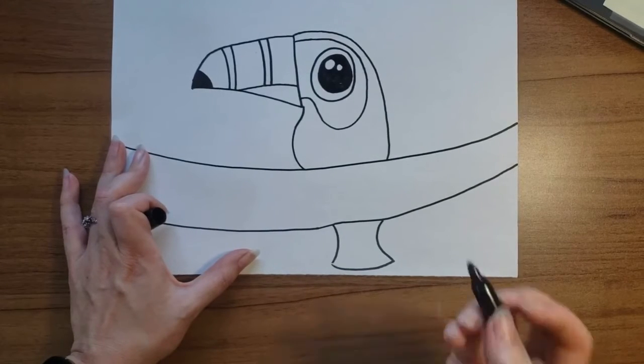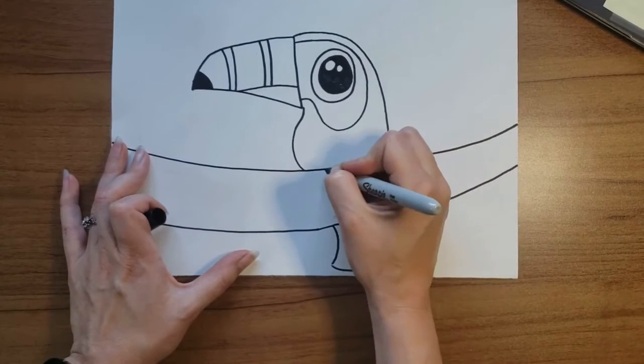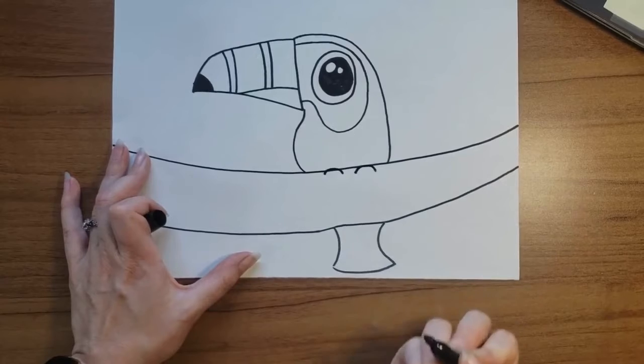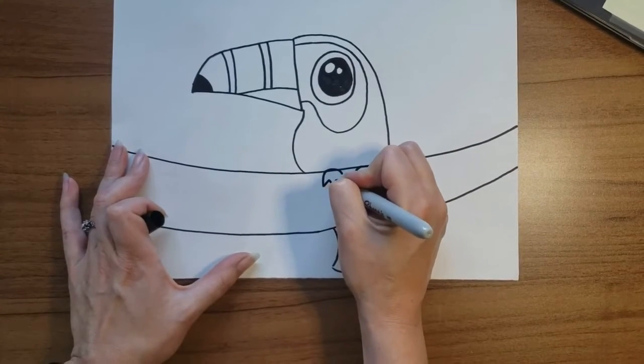The last thing we need is some feet so that we know he is sitting on this branch. I'm going to draw two little curved lines at the top of my branch, and then I'm going to do some zigzaggy toes.